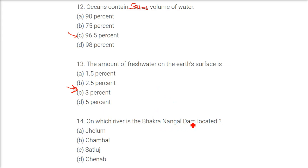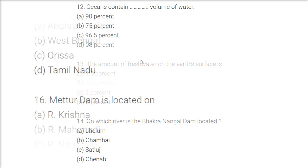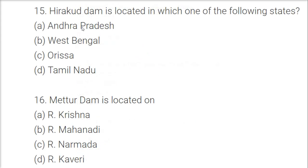On which river is the Bhakra Nangal Dam located? The answer is the Sutlej River.